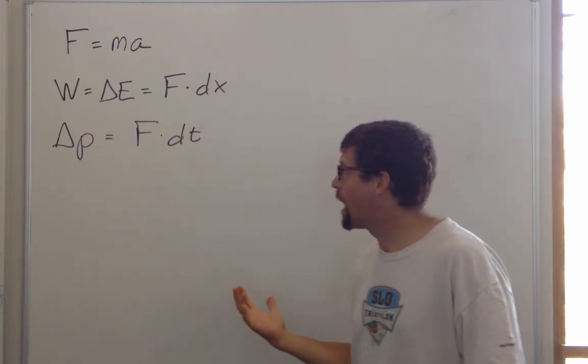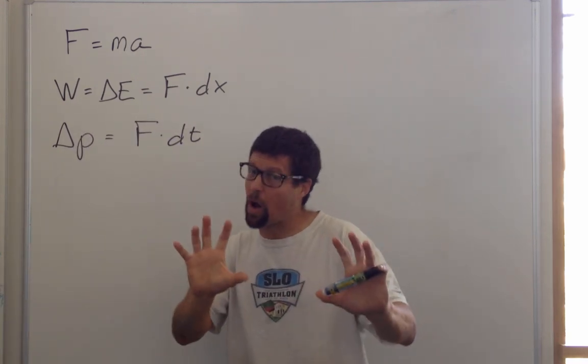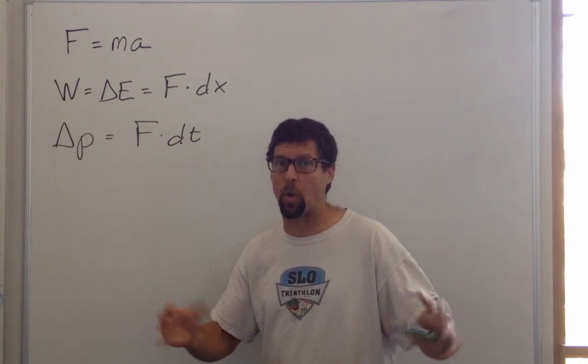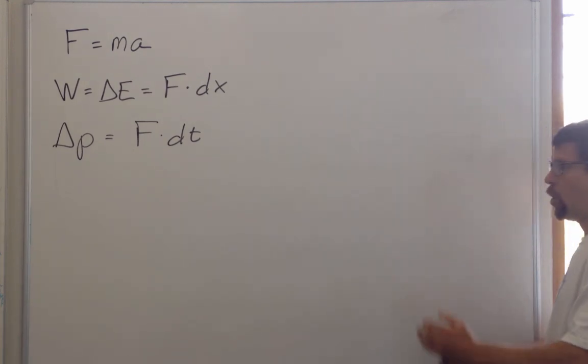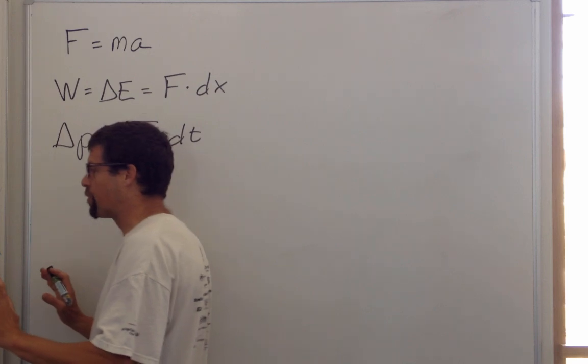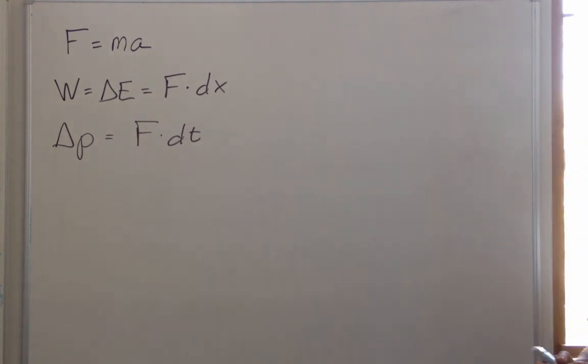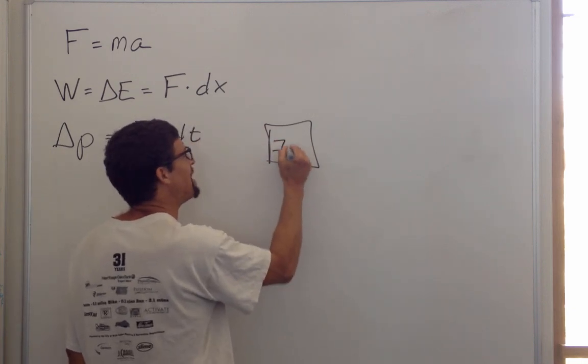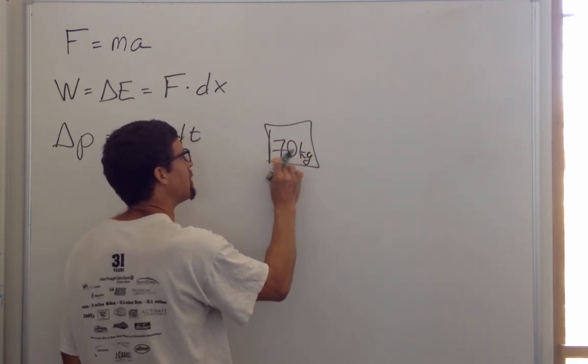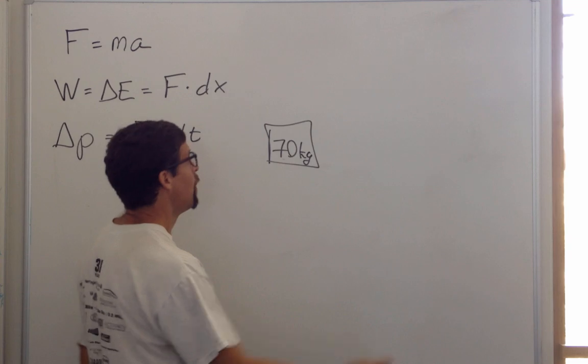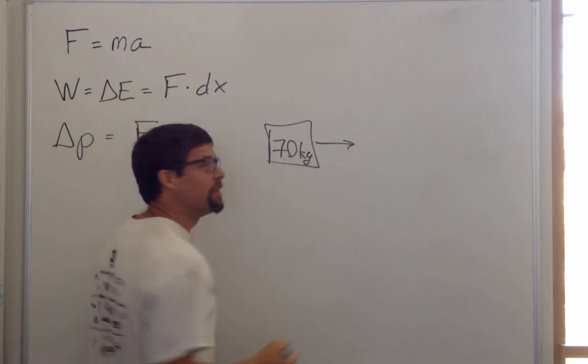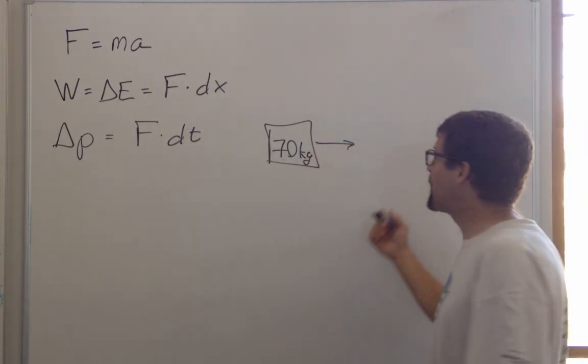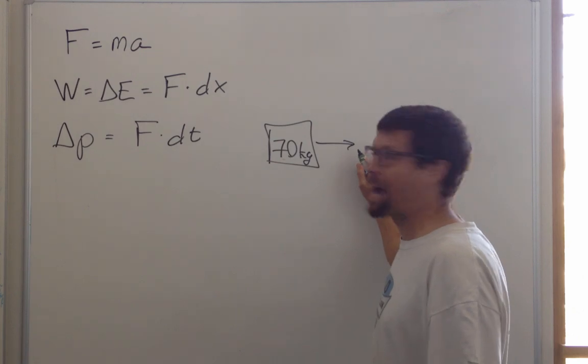So you saw how I can accelerate. We talked about one meter per second squared where I'm moving at one meter per second, no meters per second, one meter per second. If we were in outer space, what you would see is this 70 kilogram object, my body, and there's an acceleration in this direction. And so you're thinking there's got to be a force providing that.